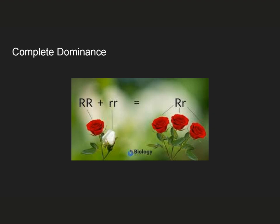So far in this class, we've only talked about dominance as complete dominance. That is, we have said that there are situations where there is a big R allele that confers a red flower color, and there's a little R allele that confers the white flower color. We've seen situations where the heterozygous individual shows the phenotype of one of the parents — in this case, the big R, big R parent. Therefore, we would say that the big R allele is completely dominant to the little R allele.